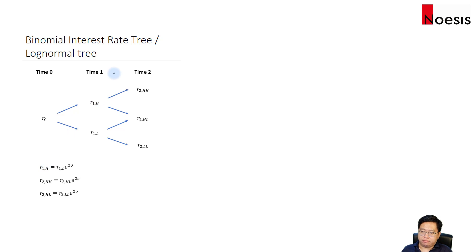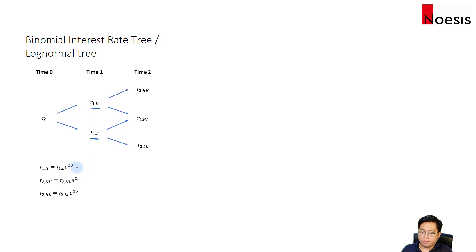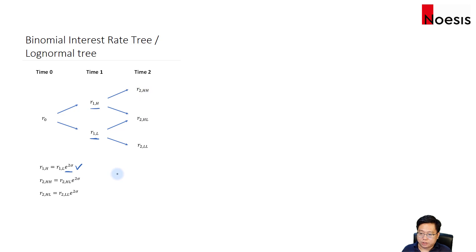The relationship at time 1 between the interest rate in the upper node, denoted as r sub 1H, and r sub 1L — we can easily determine the value of the interest rate in the upper node if we know the value in the lower node. The relationship is based on a multiplier, which is e to the power of 2 sigma, where sigma is the volatility of the short rates.